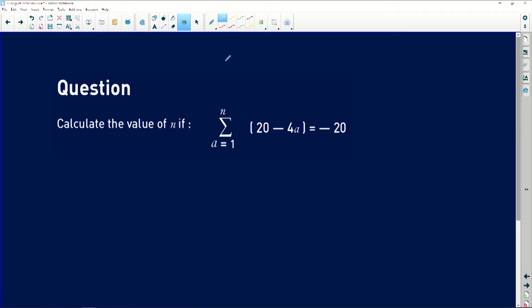According to this question, we are told that the sum of 20 minus 4a from a equals 1 all the way up to n must give us a solution of negative 20. When you see this sigma symbol, the first thing that should come to mind is the fact that we are looking for the sum. But guess what, the sum has been given to us here: S equals negative 20.